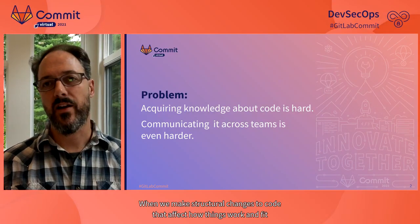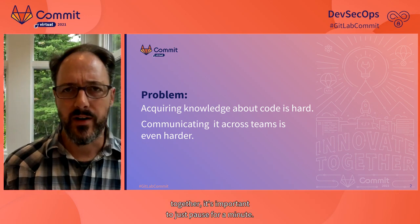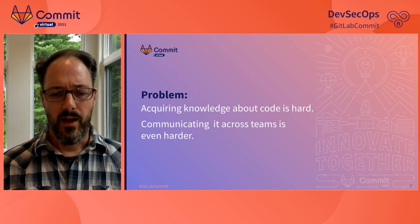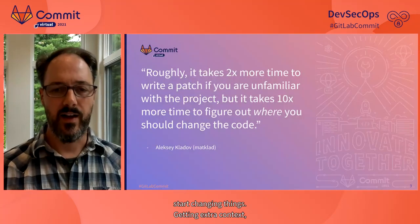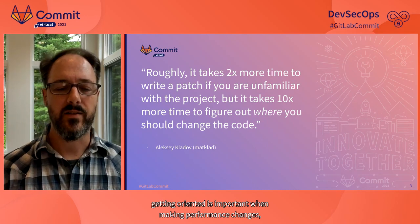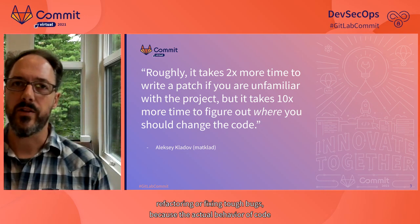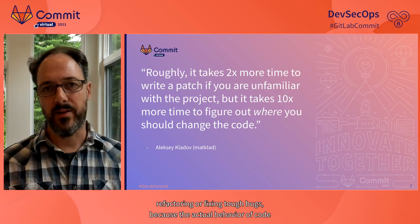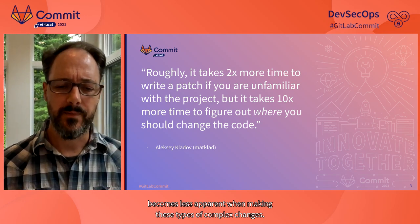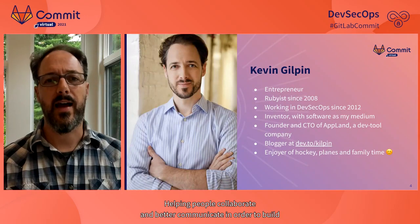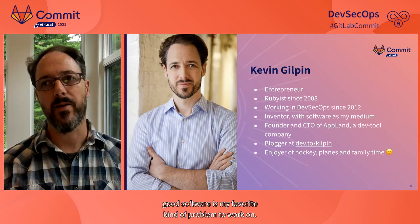When we make structural changes to code that affect how things work and fit together, it's important to just pause for a minute and confirm our assumptions before we start changing things. Getting extra context and getting oriented is important when making performance changes, refactoring, or fixing tough bugs, because the actual behavior of code becomes less apparent when making these types of complex changes. Helping people collaborate and better communicate in order to build good software is my favorite kind of problem to work on.